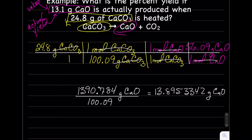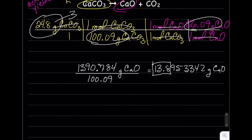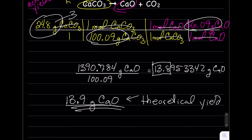Now for significant figures: our given has three sig figs. Looking at both molar masses, we have five sig figs and four sig figs, so our final answer uses three sig figs — giving us a theoretical yield of 13.9 grams CaO. This is the yield we would get in a perfect world.